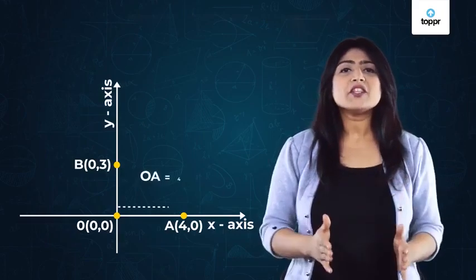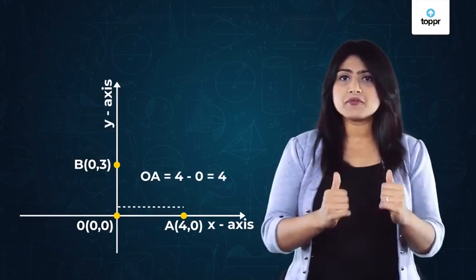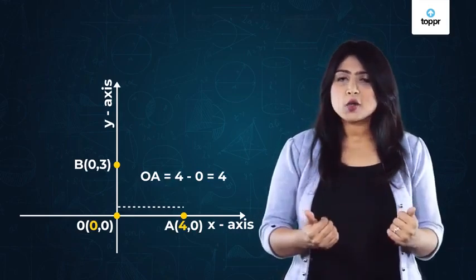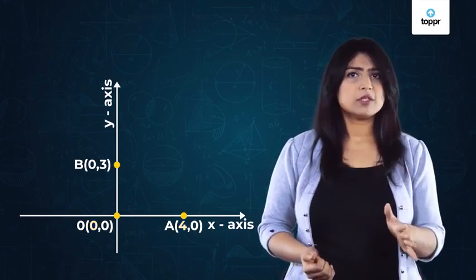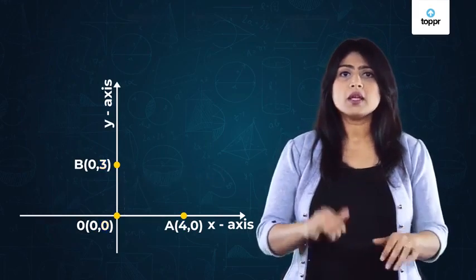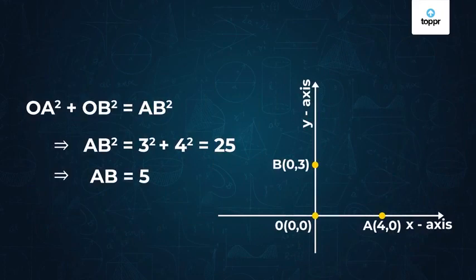Yes, the length of OA is the difference of x coordinates of points O and A as they are on the x axis. Similarly, we can find the length of OB. Now, using the Pythagoras theorem, we can find the length of AB.